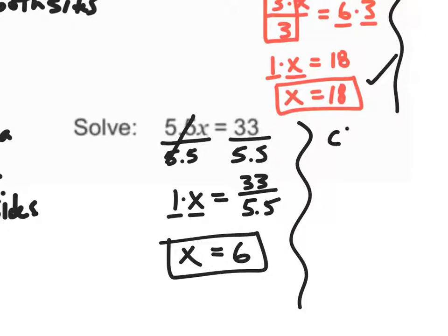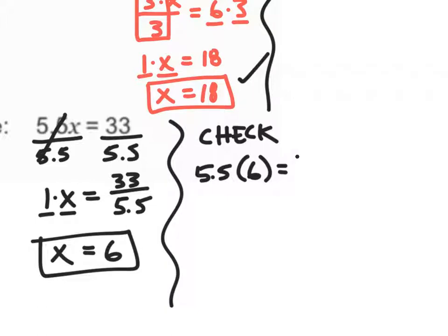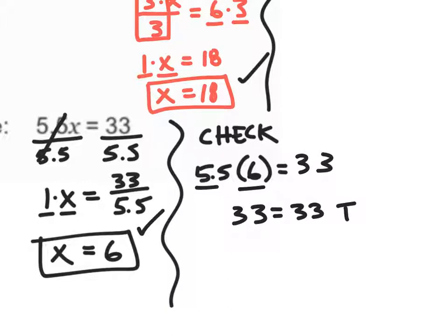Let's check and see if we're right. We can plug it back in: 5.5 times 6, does that give me 33? 5.5 times 6 does in fact give me 33. 33 is equal to 33 — we have a true statement, therefore this is correct.